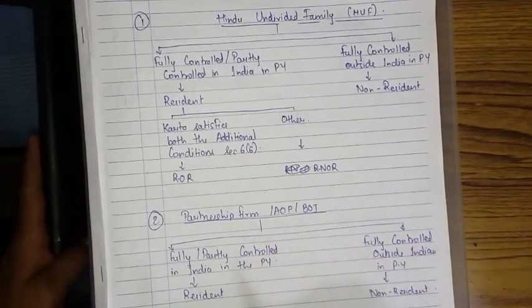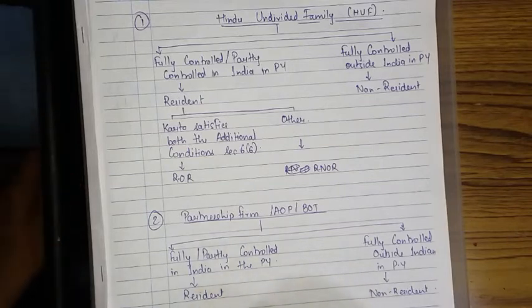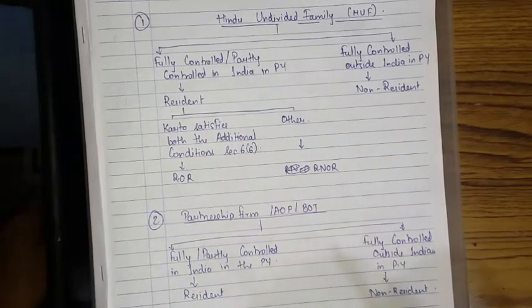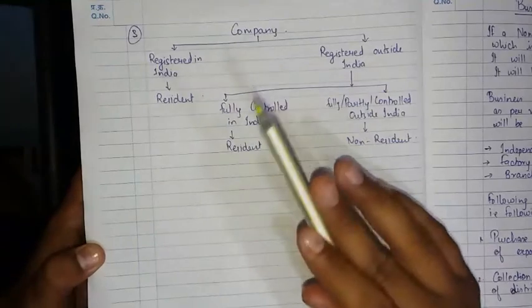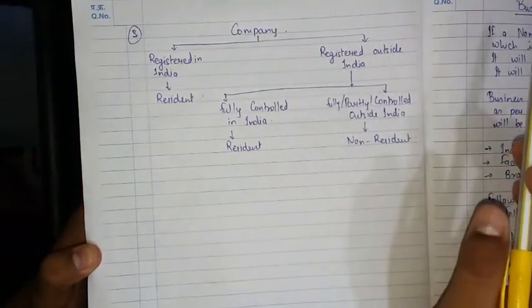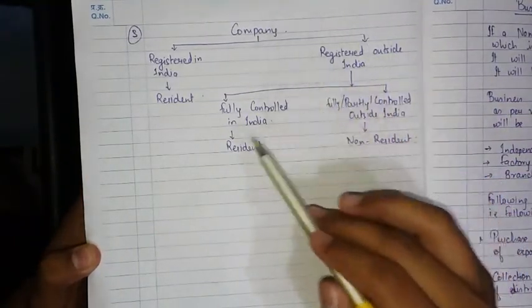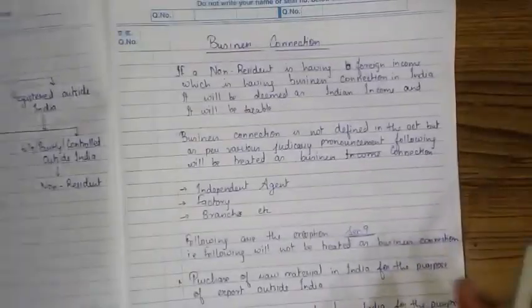Partnership firm, AOP (Association of Persons), and BOI (Body of Individuals): if fully or partly controlled in India in the previous year, it is resident; if fully controlled outside India, it is non-resident. Company: if registered in India, it is simply resident. If registered outside India but fully controlled in India, it is resident. If fully or partly controlled outside India, it is non-resident.